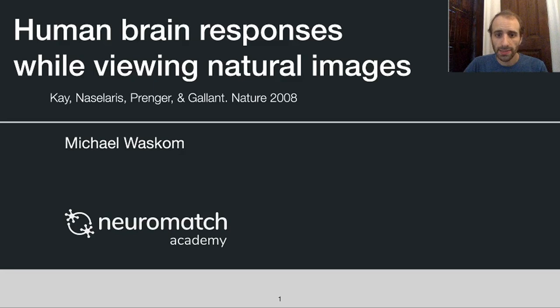This data set was originally collected and published by Kendrick Kaye in Jack Gallant's lab. In the original paper, the authors reported that they were able to identify the image subjects were looking at based only on their brain activity as reported using fMRI. And this was an exciting finding because it was the first demonstration of something akin to mind reading.